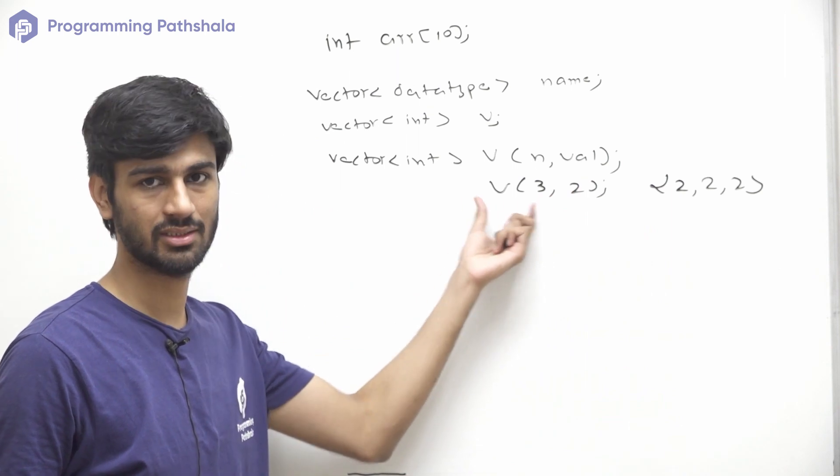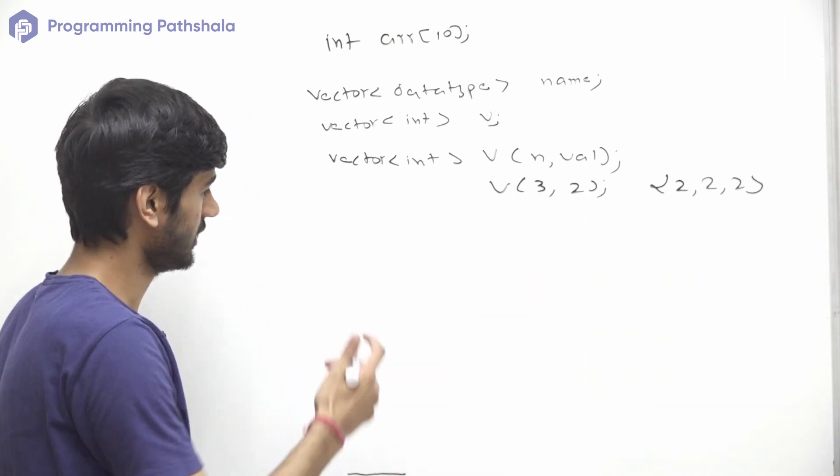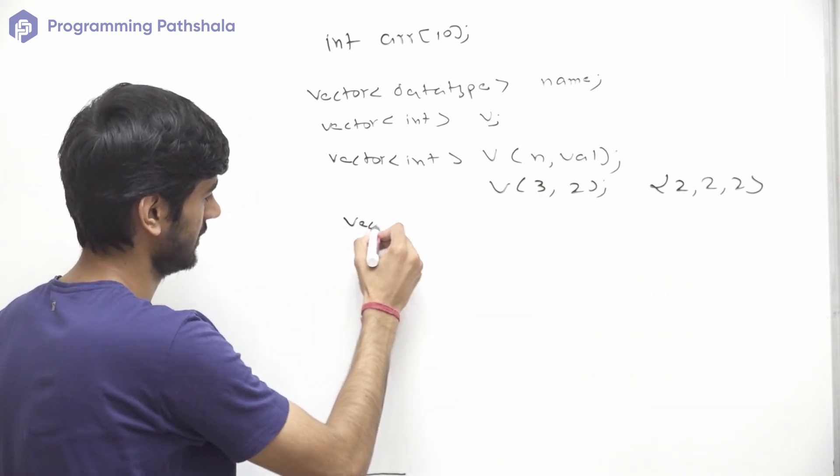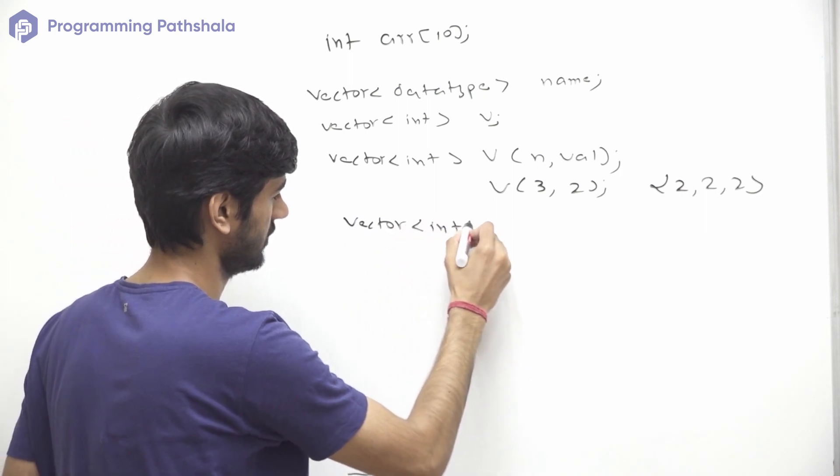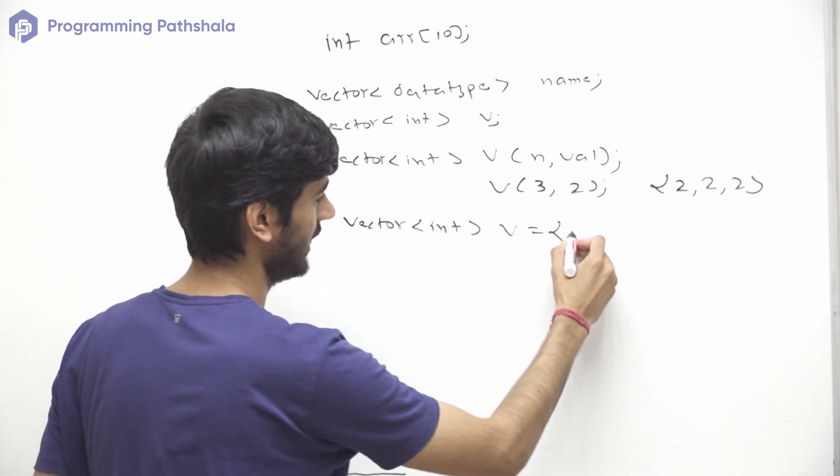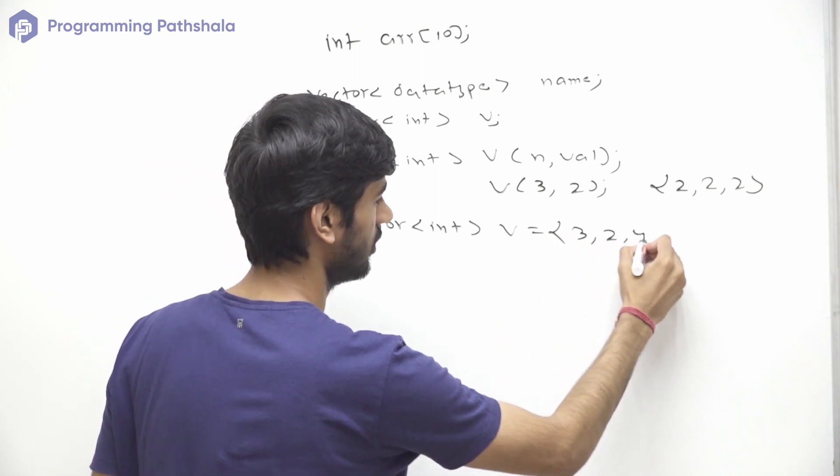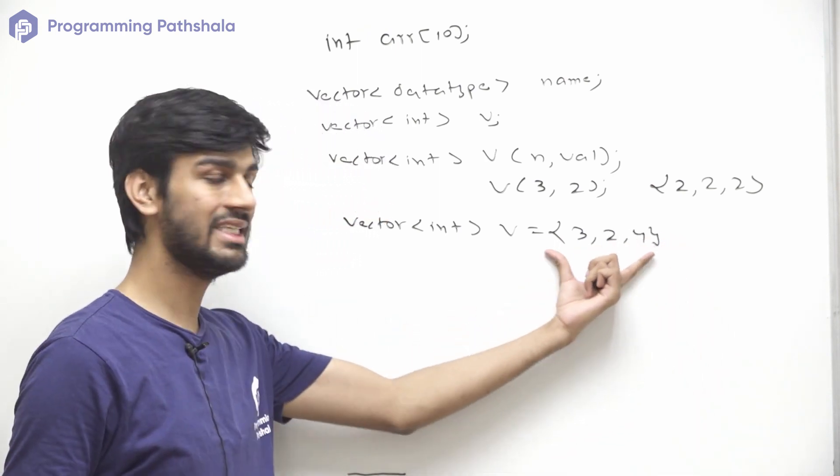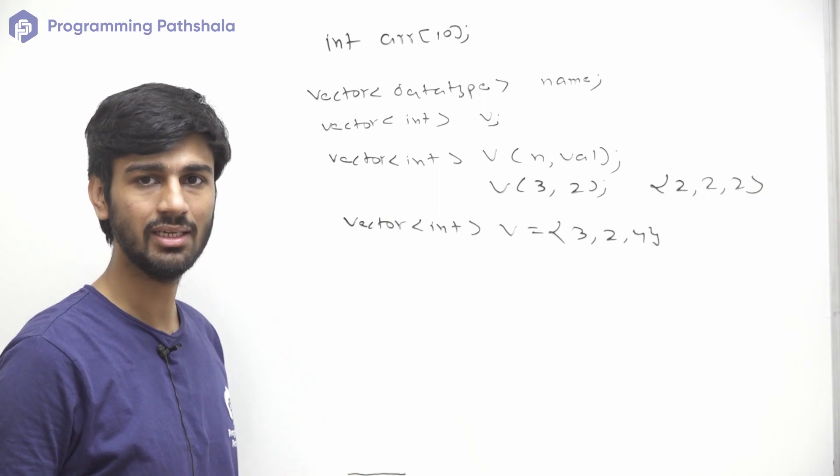Now there is one more constructor and that is v equals to, we can assign some values, something like 3, 2, 4. So this will initialize a vector with these three values and the size of this will also be 3.